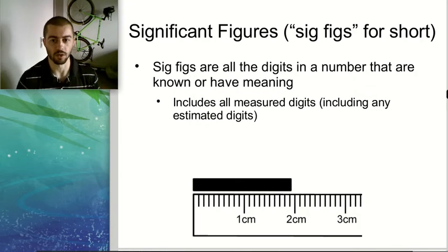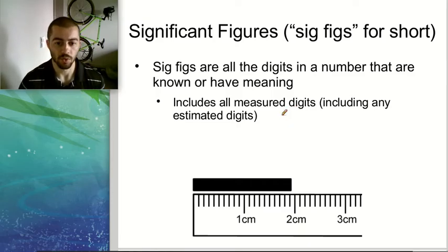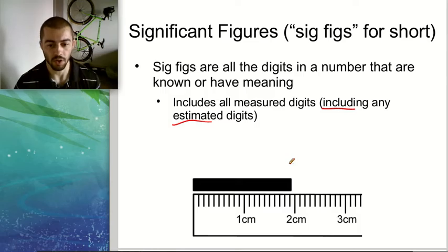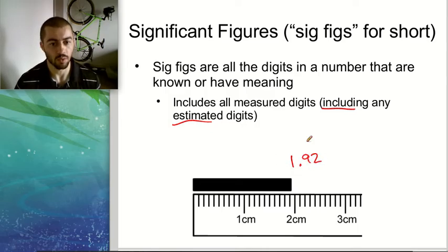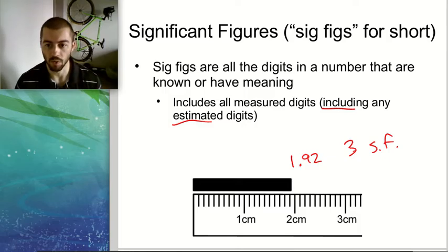Significant figures — or sig figs for short. What are they? They are all the digits in a number that we know or that have meaning. This includes every digit that you actually measured, including those estimated digits if we're looking at an analog readout like the ruler. With this ruler, we measured about 1.92, and all of these are measured digits — they would all be significant figures. So this number would have three sig figs, because we have three digits that were part of our measurement.